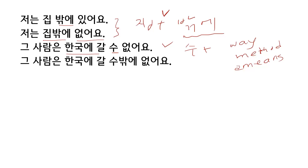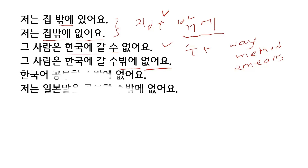그 사람은 한국에 갈 수밖에 없어요. You have 밖에 없어요 connected with 수. I have nothing but the means to go to Korea — this is exactly the same structure as 'I cannot but go to Korea'. 한국어 공부할 수밖에 없어요 — you have 밖에 없어요 — this also means 'I cannot but study Korean language'.